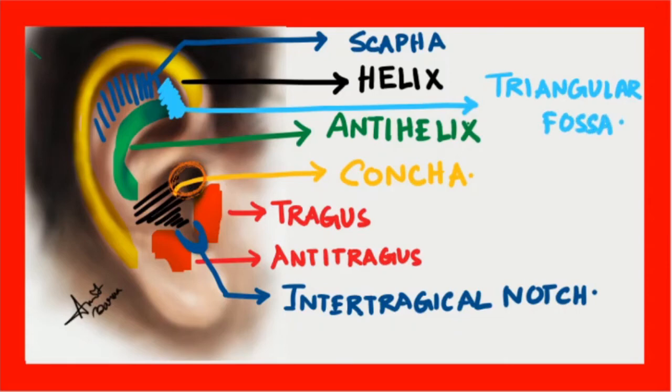To summarize: in the pinna, we have two ring-like structures — one is the helix and the other is the anti-helix. Between the helix and anti-helix, we have two flat spaces: one is the scapha, highlighted by dark blue, and the other is the triangular fossa, highlighted by light blue.